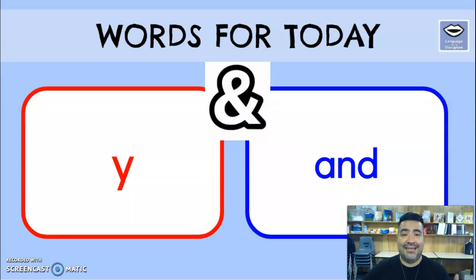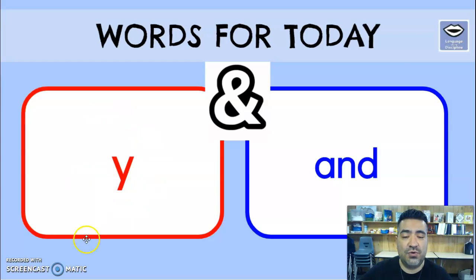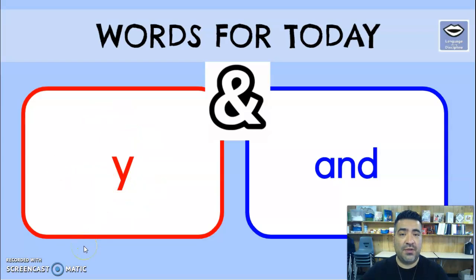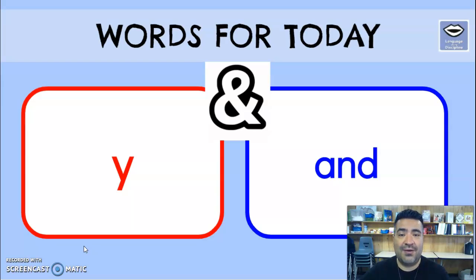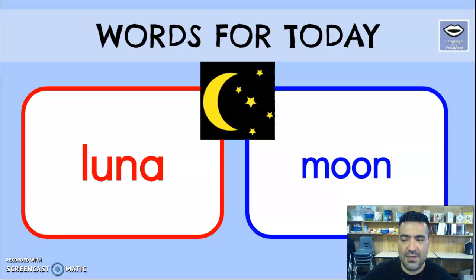First word is 'Y.' Very simple — 'Y,' which means 'and.' This is when you're joining a conjunction, joining two things. For example: I love to play soccer 'Y' basketball. 'Y' — that's an easy one.